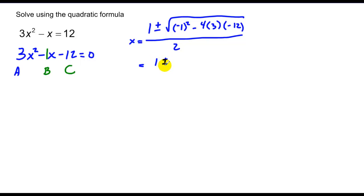So I have 1 plus or minus square root of 1 minus negative 144, and that's going to be positive, over 6, simplifies to 1 plus or minus square root of 145 over 6.